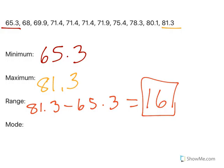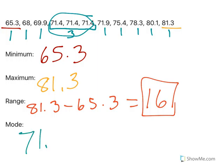The mode is the number that appears most often. So when you look through, 65.3 is there once, 68 once, 69.9 once. 71.4 is there three times. Because 71.4 is there three times, my mode is 71.4.